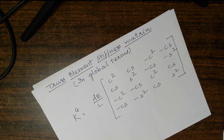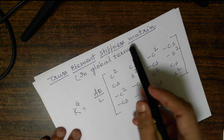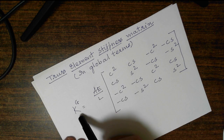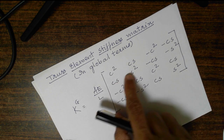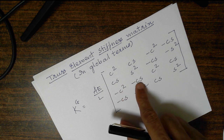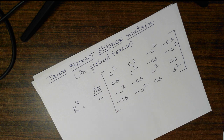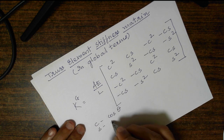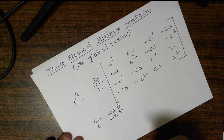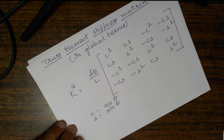Welcome. In our last lecture we have seen the truss element stiffness matrix in global terms: k_global = (AE/L) times a matrix with terms c², cs, -c², -cs, cs, s², -cs, -s², -c², -cs, c², cs, -cs, -s², cs, s². Here c means cos θ and s means sin θ for that particular member, where θ is the angle measured with respect to the global x-axis in anti-clockwise direction.